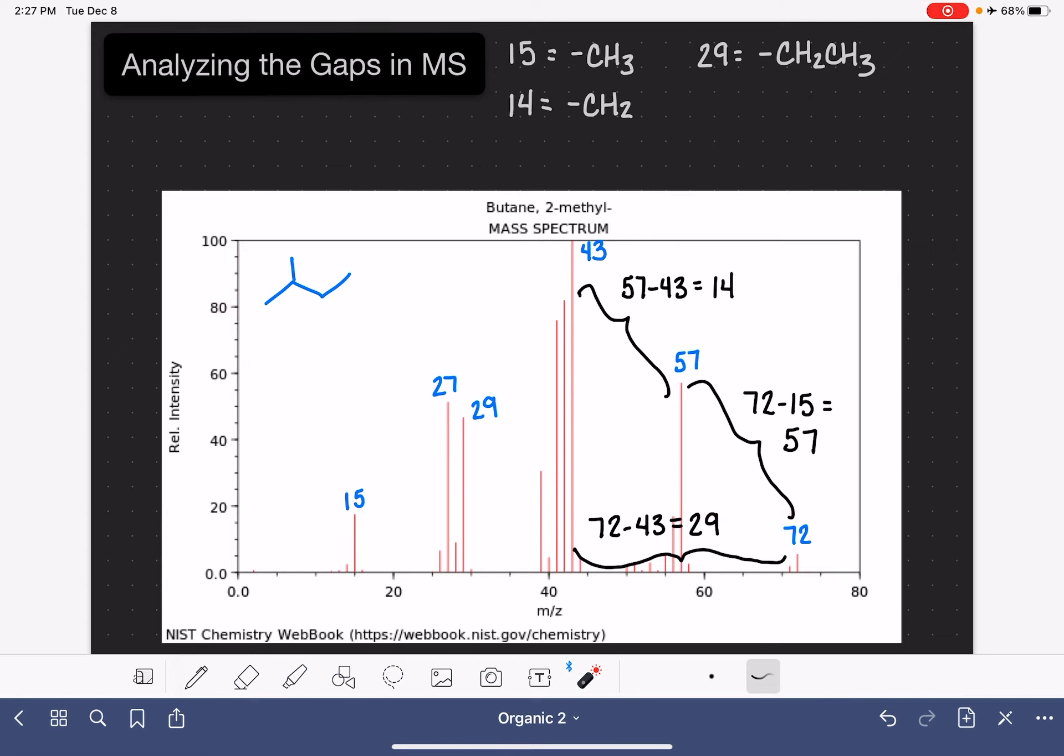However, that is pretty tedious analysis. In most situations, we don't need to rely on the mass spec to give us information about the carbon skeleton because we'll be able to get that information from other types of instrumentation like NMR.